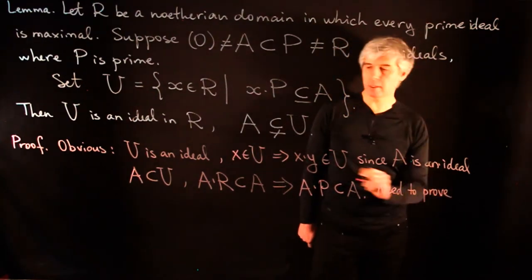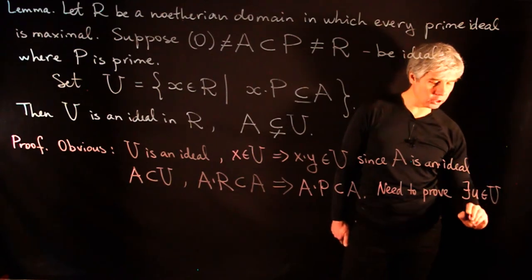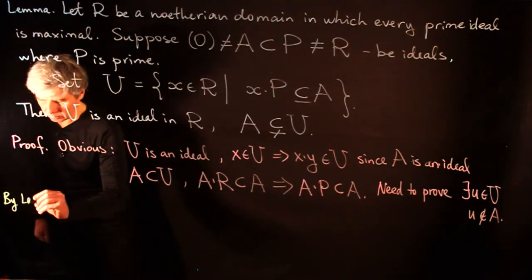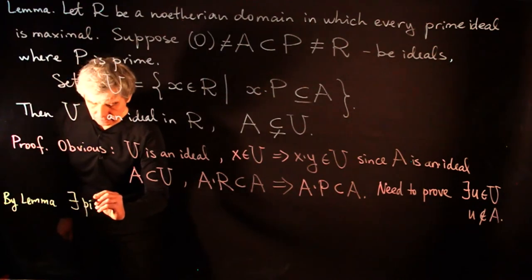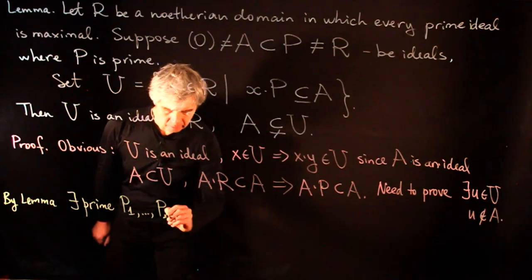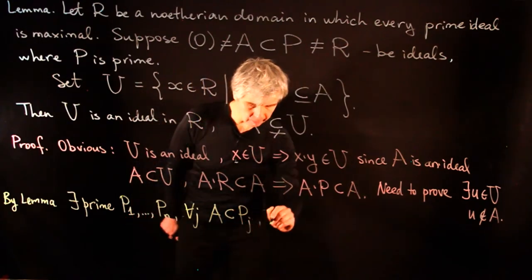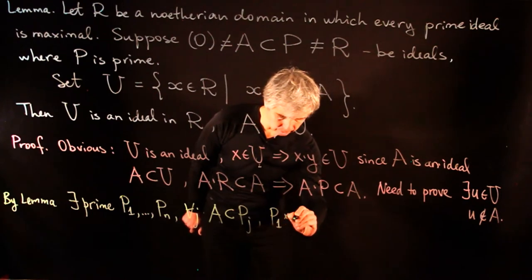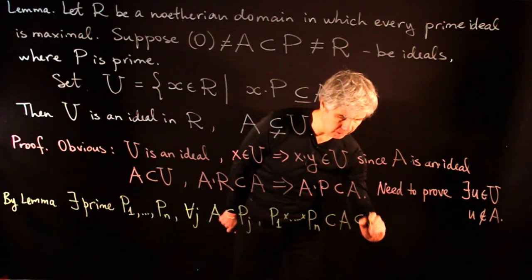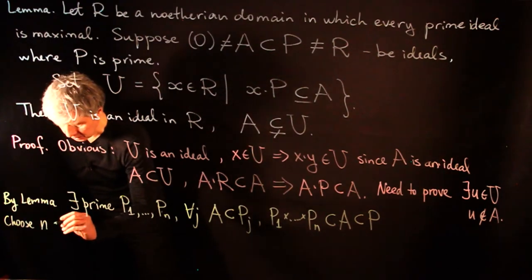So what we really need to prove is that A ≠ U — that there exists an element u in U which is not in A. By the previous lemma, there exist prime ideals P₁ through Pₙ such that for all j, A ⊆ Pⱼ, and the product P₁·…·Pₙ ⊆ A ⊆ P. We choose n as small as possible.